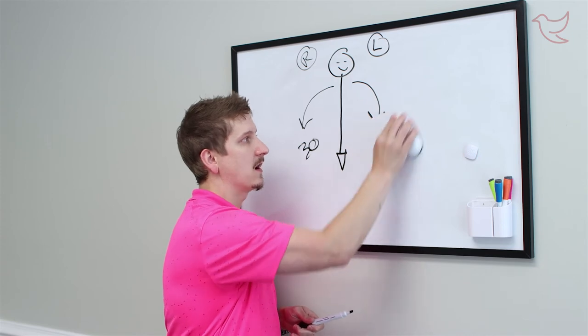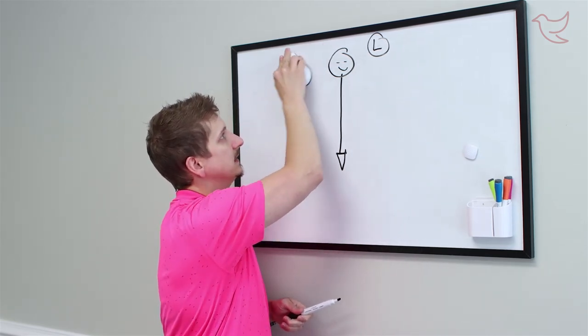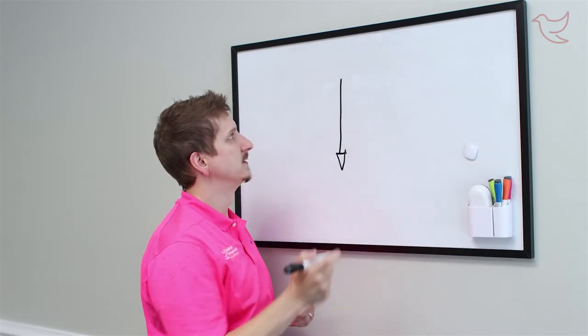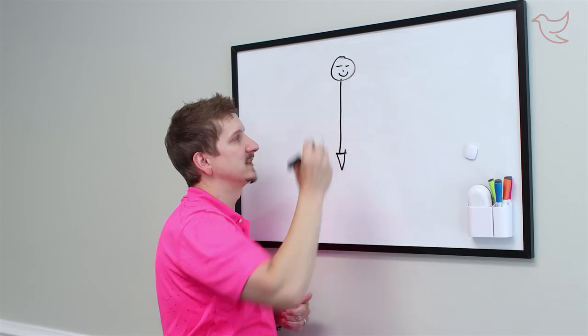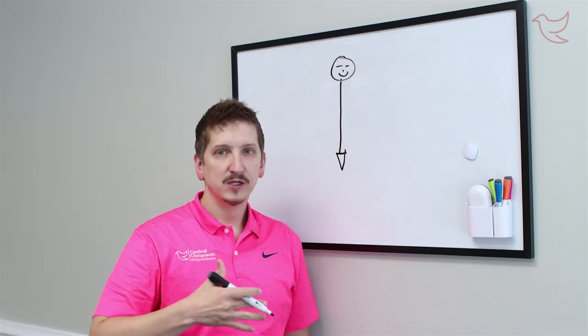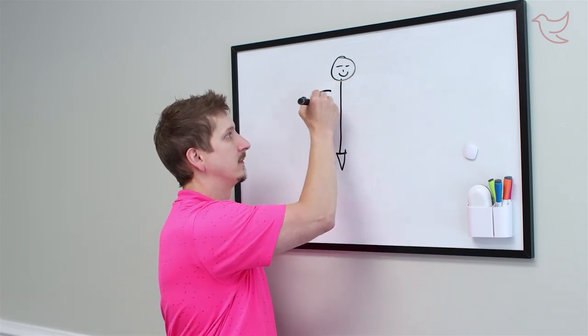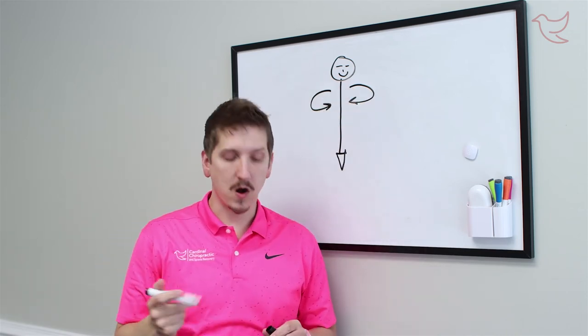Last one. And this is the harder one. This is rotation. So again, we'll draw our beautiful little human being, huge smile, give ourselves a little nose. So rotation is simple, right? Twisting side to side. This one's a little bit harder.